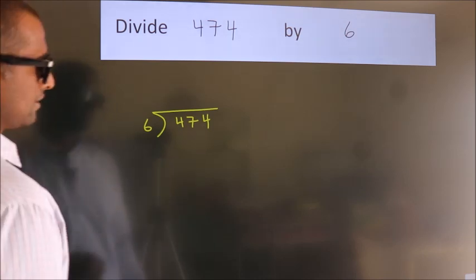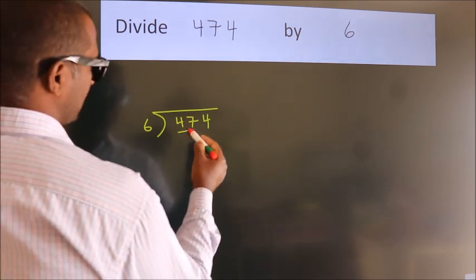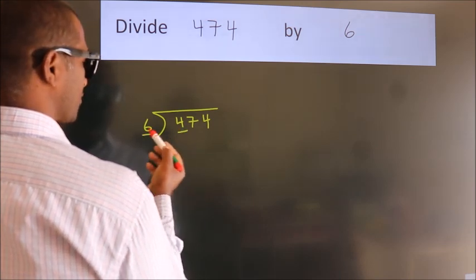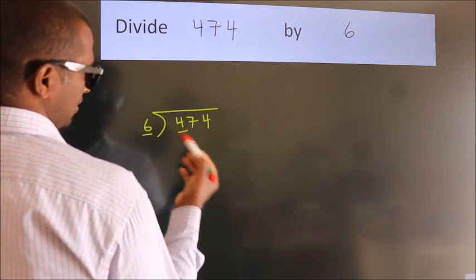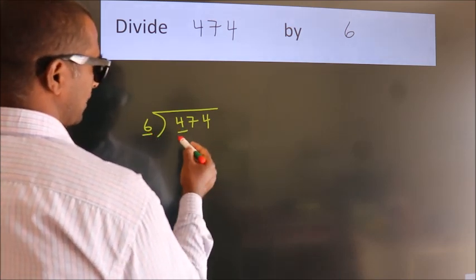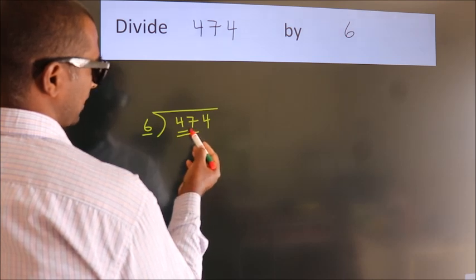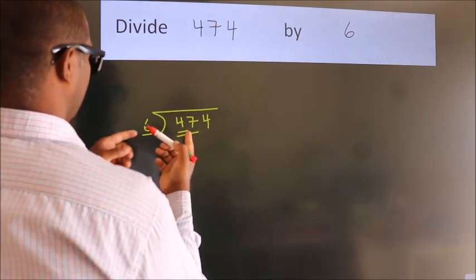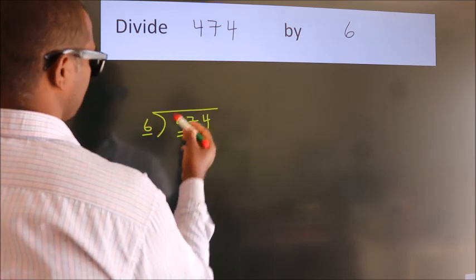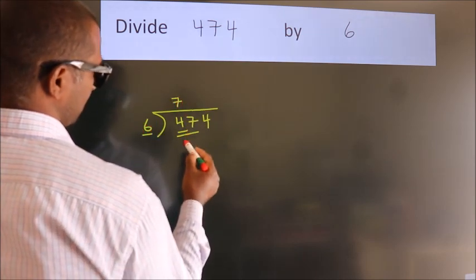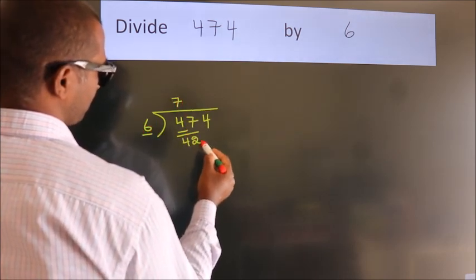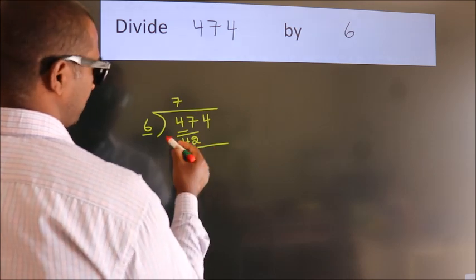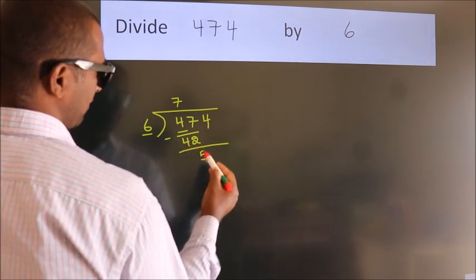Next, here we have 4, here 6. 4 is smaller than 6, so we should take two numbers: 47. A number close to 47 in the 6 times table is 6 sevens 42. Now we should subtract. We get 5.